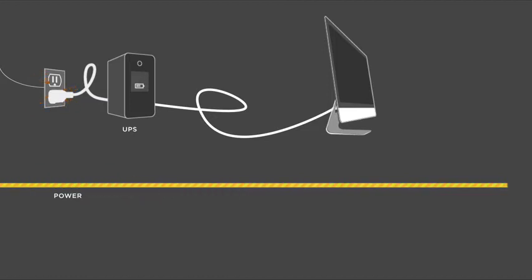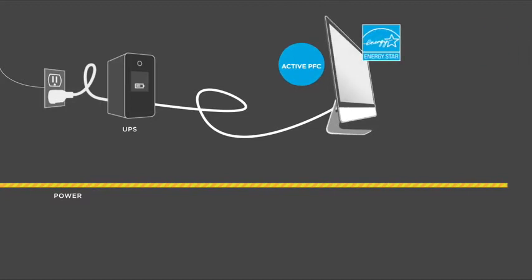Active power factor correction, or active PFC, improves the energy efficiency of power supply units in newer and higher-end computers and electronics. For example, any equipment with Energy Star certification has active PFC circuitry. This technology is becoming widely used and it requires even more consistent power.